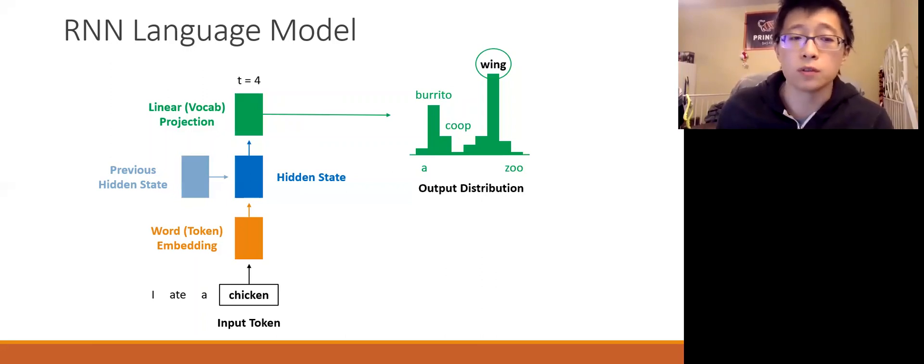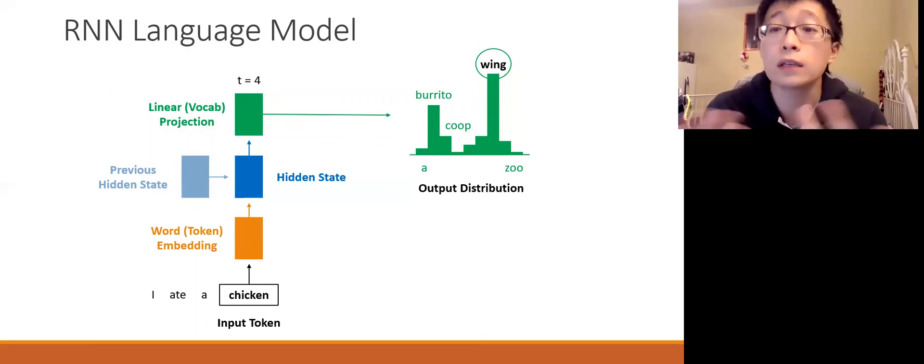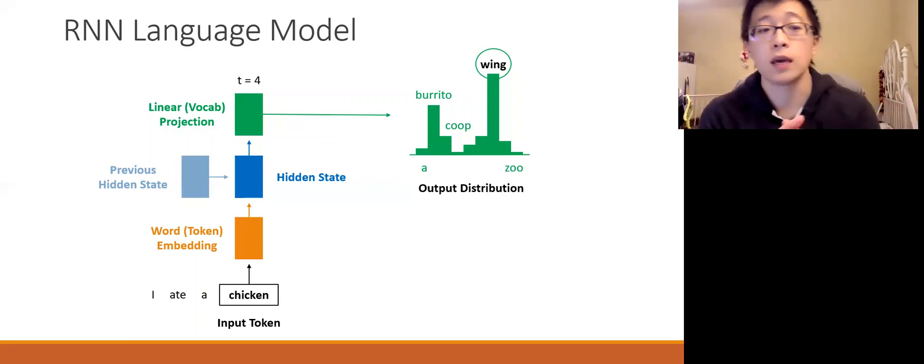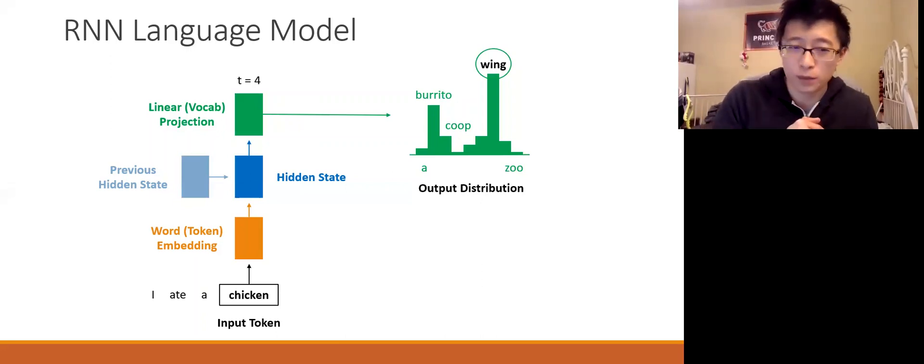But our output distribution is over our vocabulary space. It represents the likelihood or the appropriateness, if you will, of each candidate for the next word. For example here, if our context is I ate a chicken something, the output distribution tells us that wing is very likely to follow. Burrito is also likely, and coop, as in I ate a chicken coop, doesn't really make sense, so it has low likelihood assigned to it.